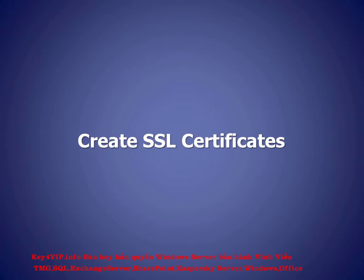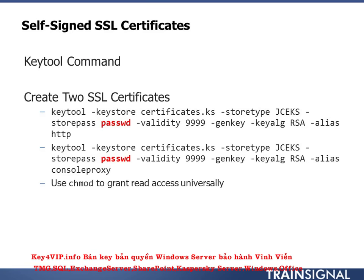Now that the vCloud Director server is ready, we need to do a little more prep work — we're going to make some SSL certificates. Specifically, we need to create two certificates, one for each NIC. When you first look at the keytool command to do this, you might think it looks insanely difficult, but once I break it apart it becomes a lot less intimidating. I'll be honest — I've never been able to memorize this command and always have to look it up.